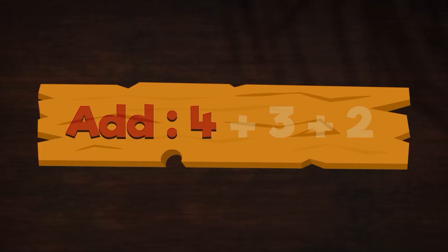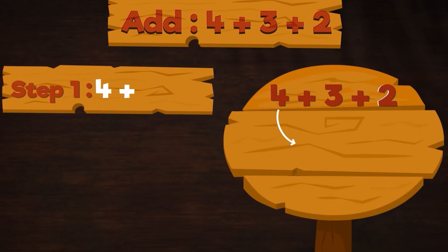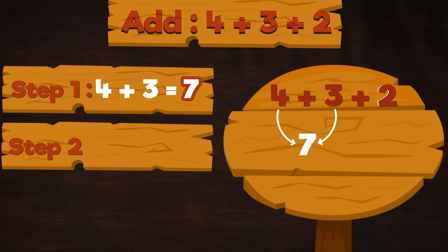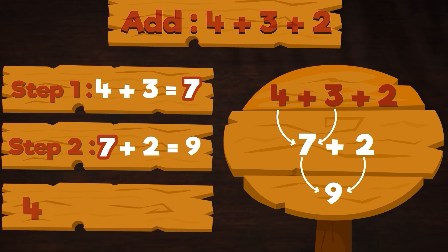Add 4 + 3 + 2. I will try that. Step one, 4 + 3 = 7. Step two, 7 + 2 = 9. So 4 + 3 + 2 = 9.